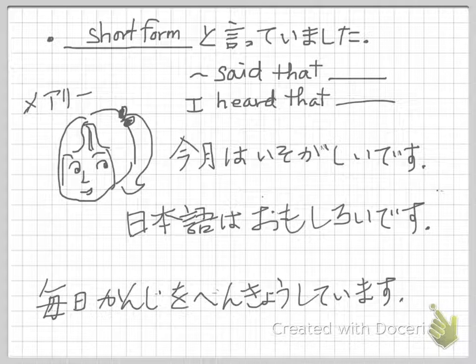Next one. You want to say 'Mary said such and such' or 'somebody said such and such.' You need to add to iittemashita. To iittemashita — you are reporting what someone said. Again, this と is like a quotation marker, indicating the quoted content. It's the same structure.